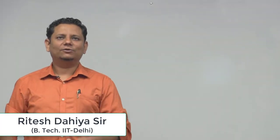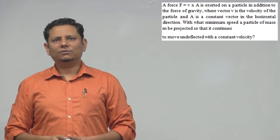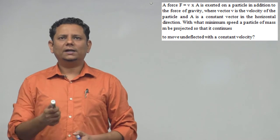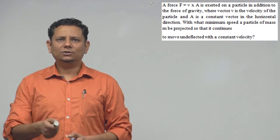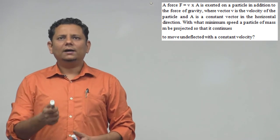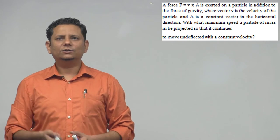Next question: A force F = V × A is exerted on a particle in addition to the force of gravity, where V is the velocity of the particle and A is a constant vector in the horizontal direction. With what minimum speed must a particle of mass M be projected so that it continues to move undeflected with a constant velocity?